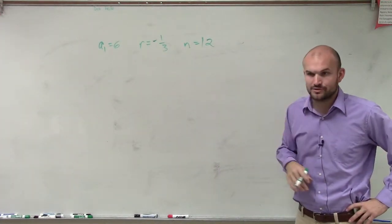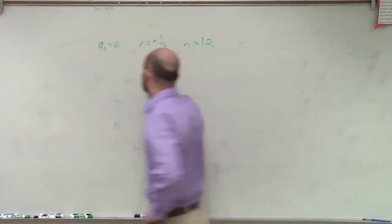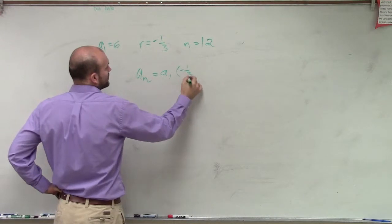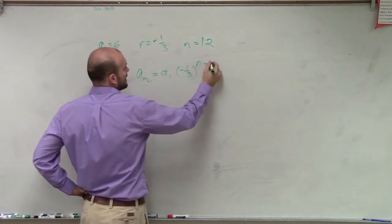So what we're going to do is we're going to use the formula for our geometric series, which is a sub 1 times negative 1 third times n minus 1.